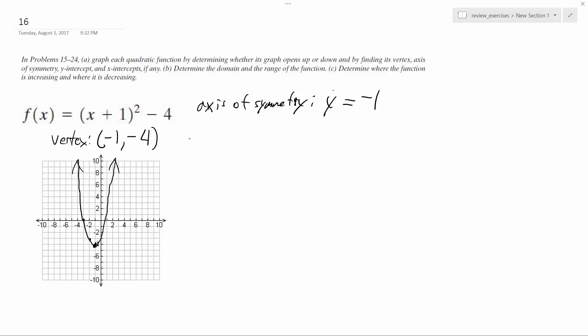So x-intercept, oh I didn't find that last time. X-intercepts are going to be at, so what does x plus one squared minus four equals zero. So x squared plus two x plus one minus four equals zero. So this ends up becoming x squared plus two x minus three equals zero.